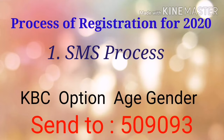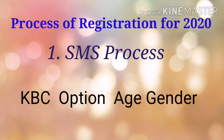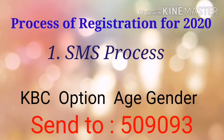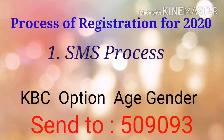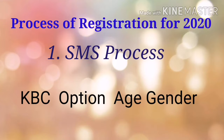If you want to do registration through SMS, what do you need to do? Whatever the question is, the answer number is 509093. This is our number which you will send the message to. As shown on the screen, first you have to write KBC in capital, then give a space, then write the option.